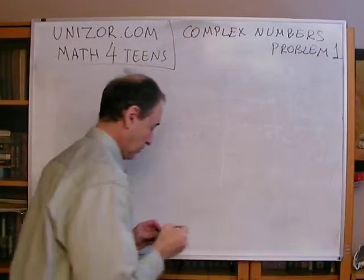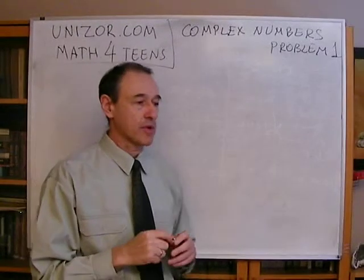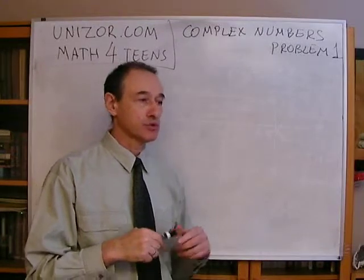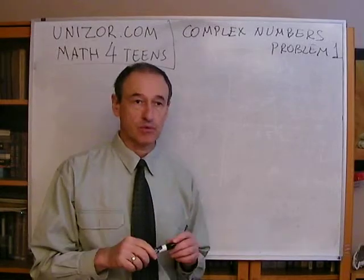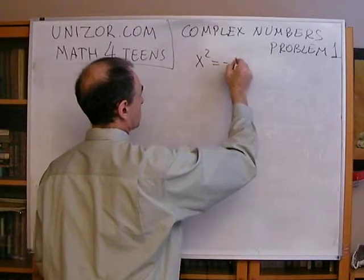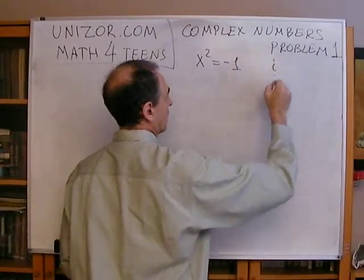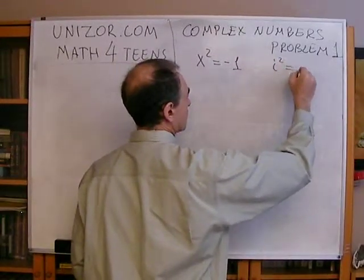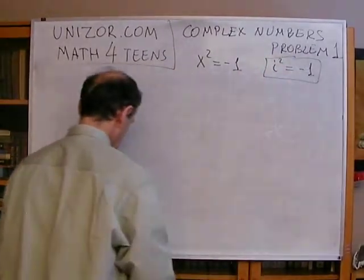Problem number one. Very easy. You remember that complex numbers were introduced to be able to solve certain equations which we could not solve within the real numbers. One of those equations was something like x squared equals minus one, and we introduced i as a purely artificial new number, the only property of which is that it is a root of this equation.